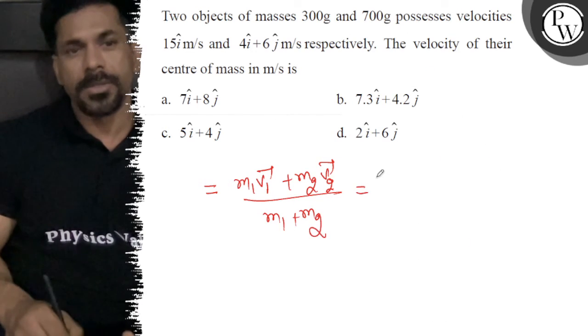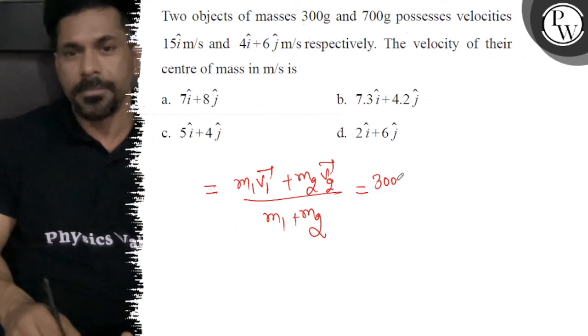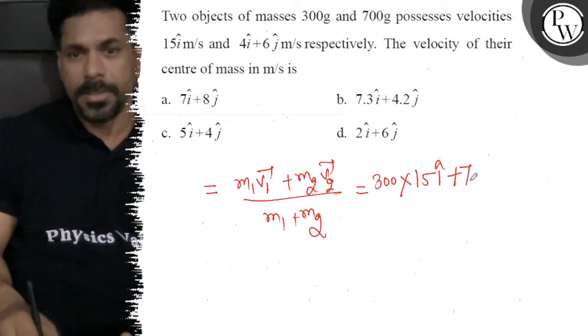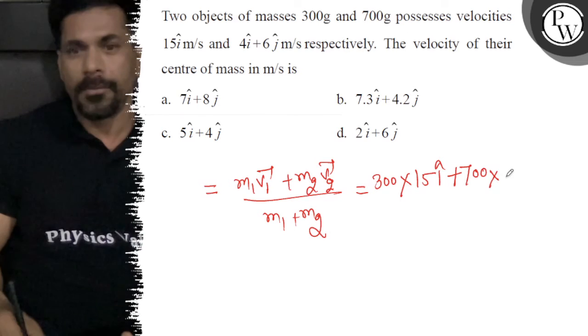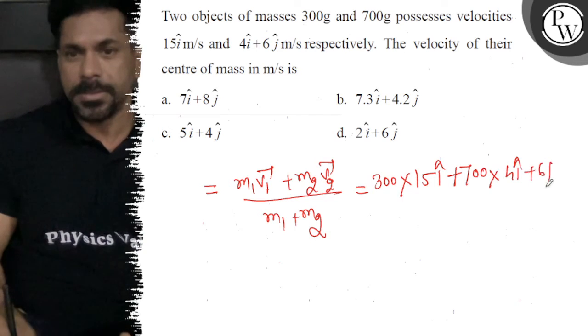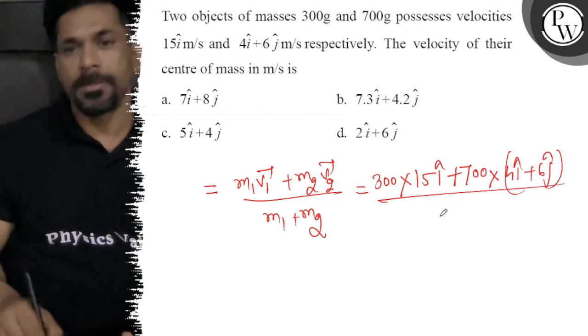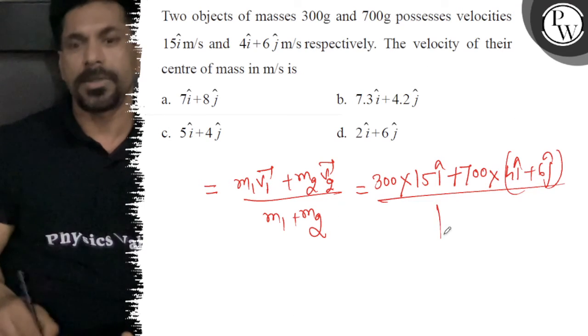So m1 is 300 grams times v1 which is 15î, plus m2 is 700 grams times (4î + 6ĵ), divided by 300 plus 700, which equals 1000.